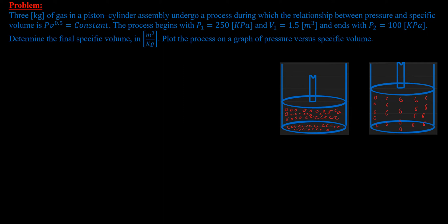In this problem, we have three kilograms of gas in a piston-cylinder assembly undergoing a process during which the relationship between pressure and specific volume is PV to the power half equals constant. The process begins with P1 equals 250 kilopascals and V1 equals 1.5 cubic meters, and ends with P2 equals 100 kilopascals. Determine the final specific volume in cubic meters per kilogram and plot the process on a graph of pressure versus specific volume.